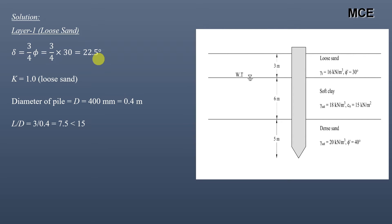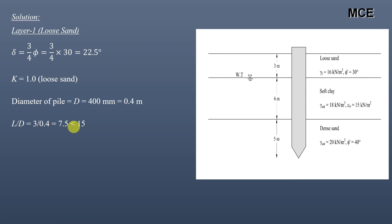In granular soil, the arching effect is always present, which states that the effective stress increases only up to a certain depth. This depth is usually taken as 15d to 20d. We have to check whether the effective stress will increase linearly or only up to a certain depth. The value of l/d in this layer: the length of the pile in this soil layer is 3 meters and the diameter is 0.4, giving l/d = 7.5, which is less than 15. This means the effective stress will increase linearly with depth.